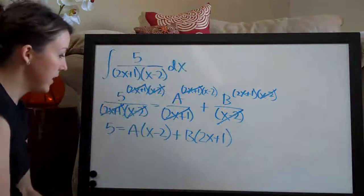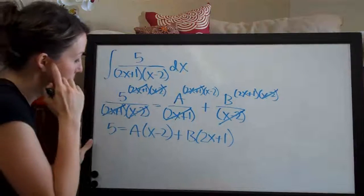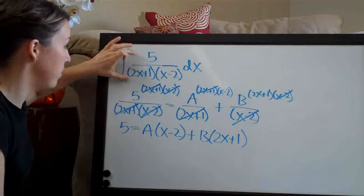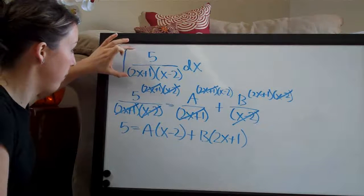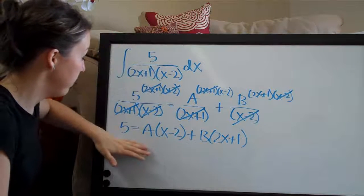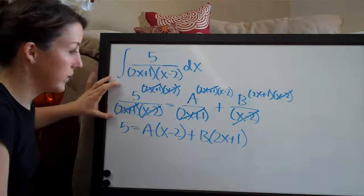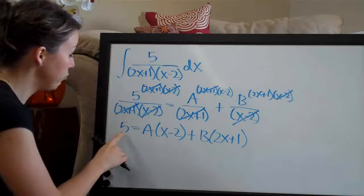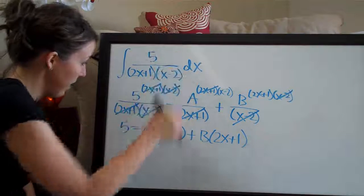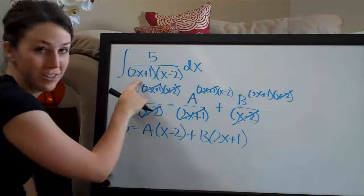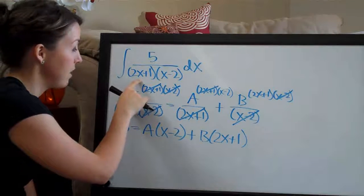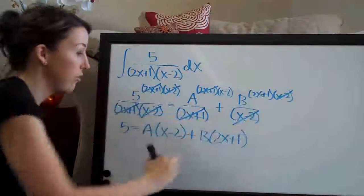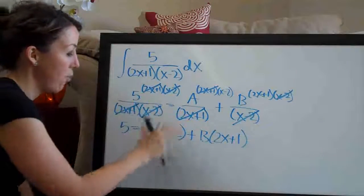As you can see, you probably could have gone straight from the original problem to this step. Basically you just have the numerator 5, and then A times one of the terms in the denominator plus B times the other term. I just went through the full step so you could see how we get here.